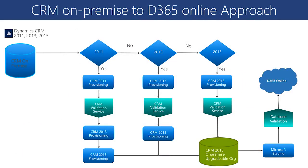Here's a quick look at this process. As you can see, if your CRM on-premise environment is CRM 2011, you go through the migration process as shown on the left-most line. Initially, we provision your environment, then we run the validation service to check and confirm your CRM on-prem environment matches what is expected in the CRM online environment. Then we upgrade it to CRM 2015, move to a staging database, and then move to CRM online.